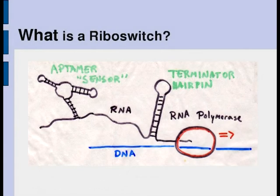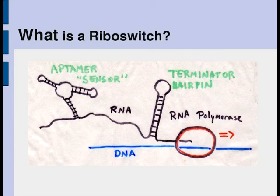As this RNA is transcribed, it's free to sample an ensemble of structures by virtue of its base pairing with itself. One structure the RNA could code for is a riboswitch, which consists of a sensor region called an aptamer, which binds a ligand in solution — for instance, glycine. Binding the ligand stabilizes the aptamer, which will in turn affect whether or not a terminator hairpin that is transcribed later can reach its desired structure. The riboswitch is then a detector that modifies how much of a gene is expressed based on how much solute is present.